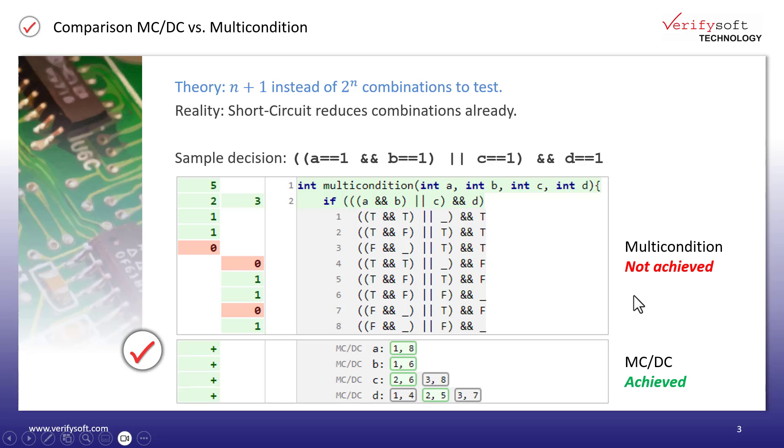Here, we manage to achieve complete coverage with just five tests. The report also shows how the MCDC coverage can be derived from the truth table. Let's take a closer look at the last condition D as an example.